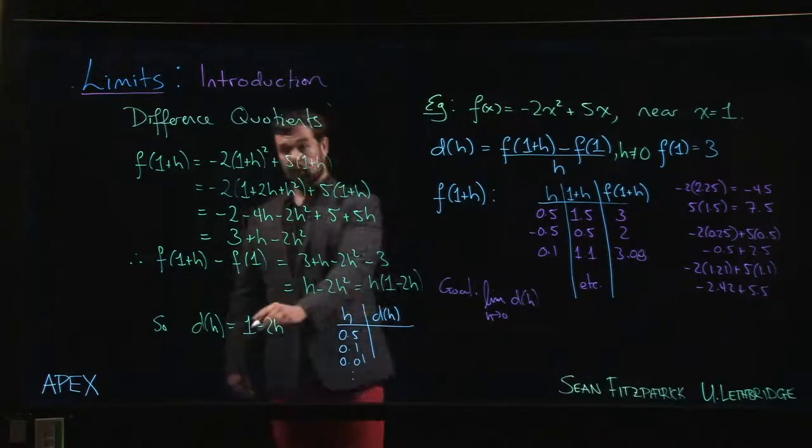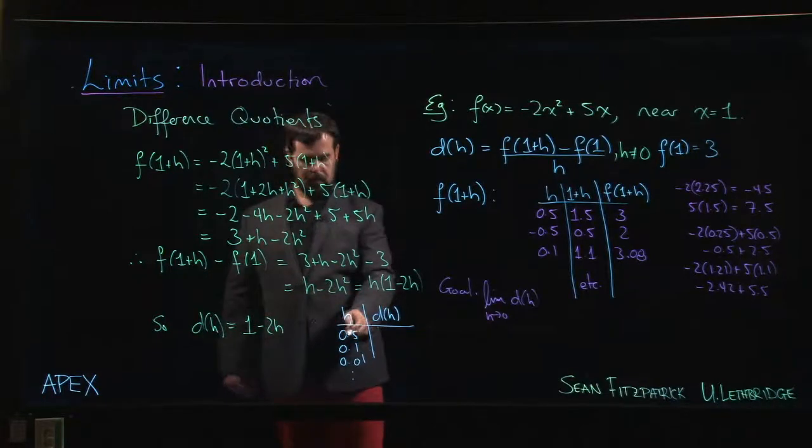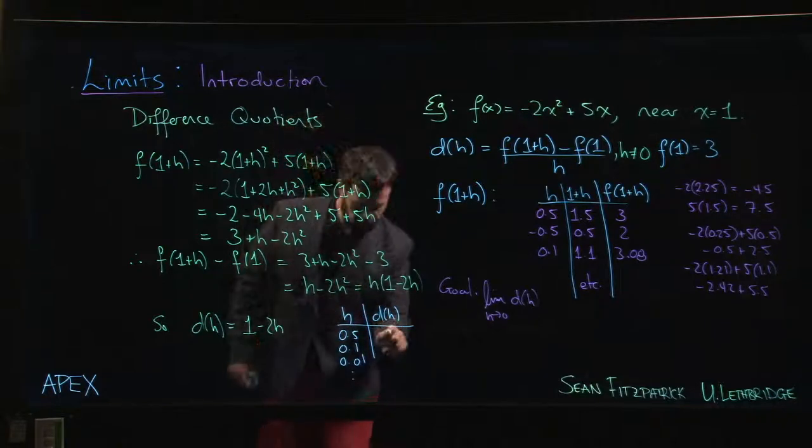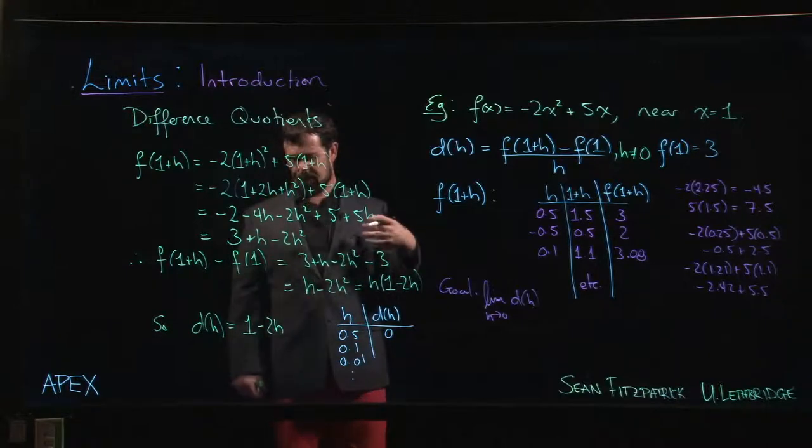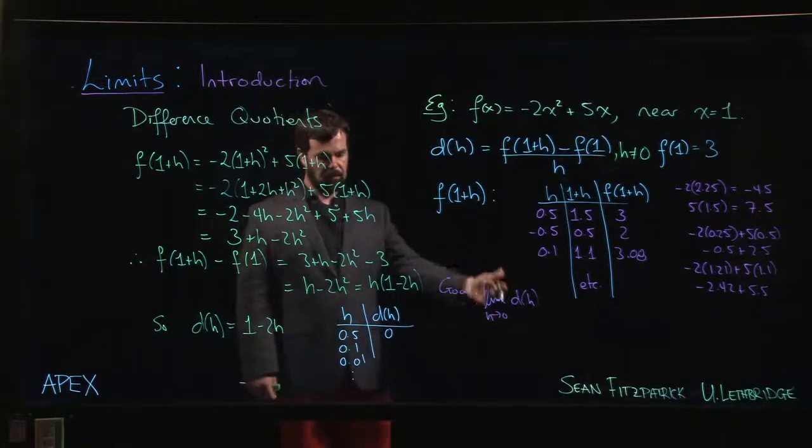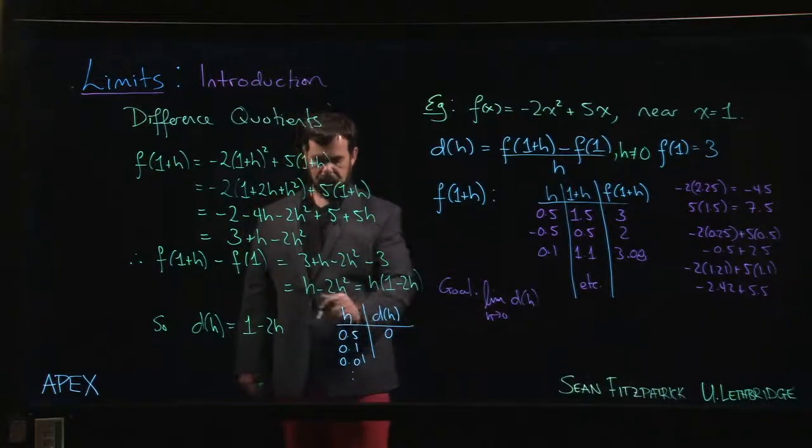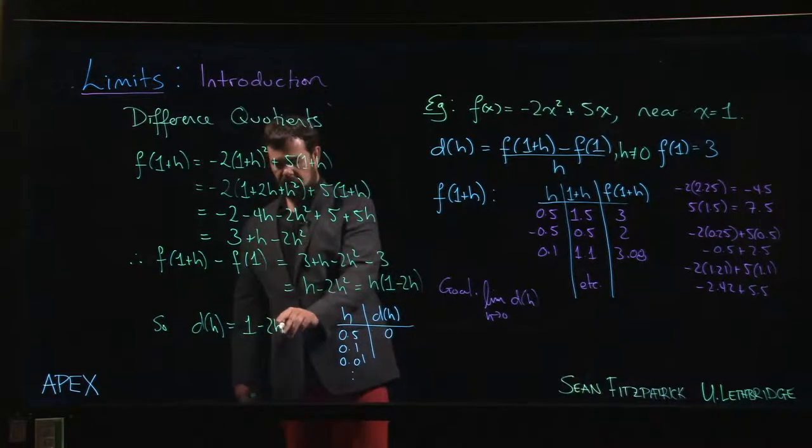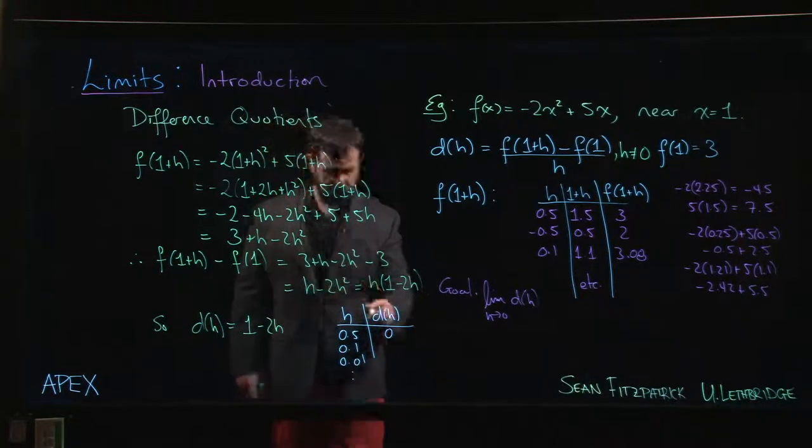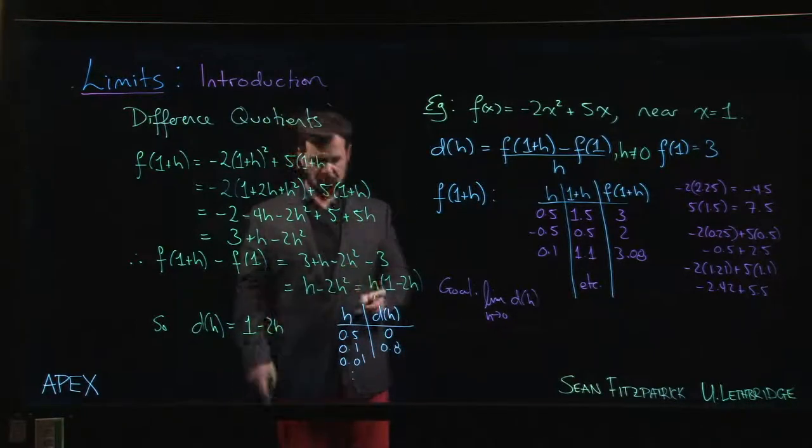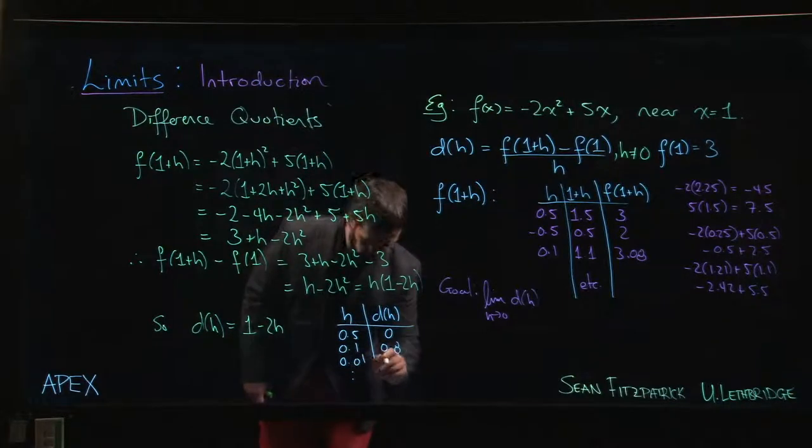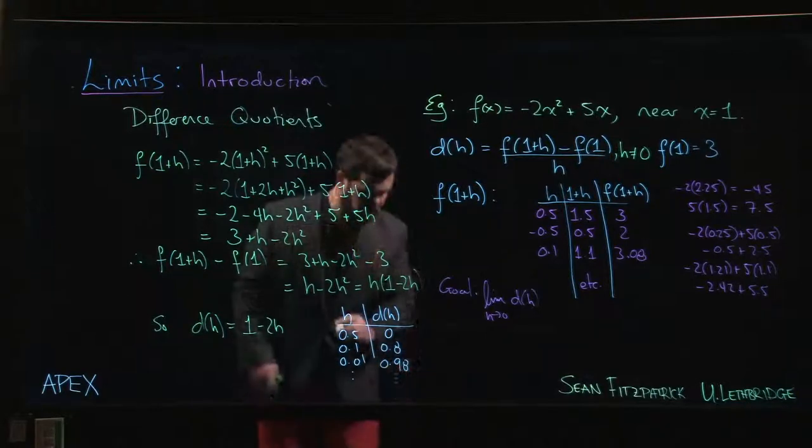I can plug those values in. So 2 times H, 2 times 0.5, that's 1, 1 minus 1 - interestingly enough, I find that there the difference quotient is 0. But I've got to let H get closer and closer to 0. So what happens at 0.1? Now it's 1 subtract 0.2, so I get 0.8. Then I get 1 subtract 0.02, so I get 0.98, and so on.